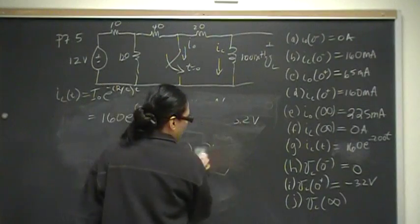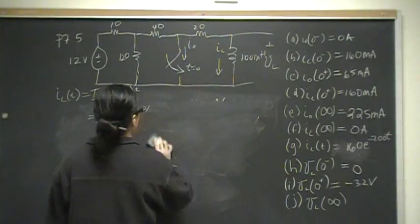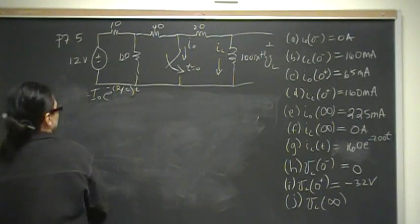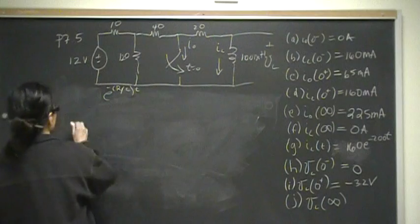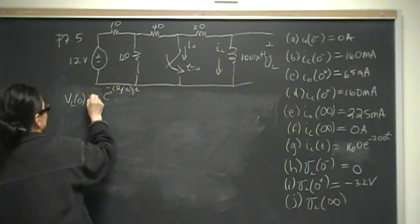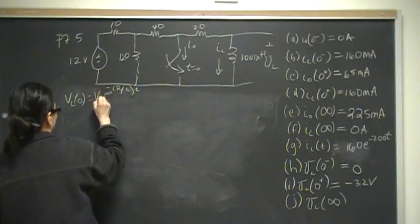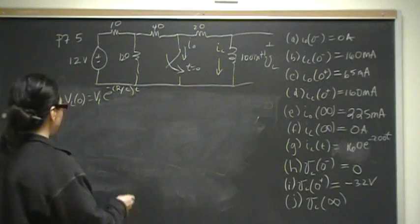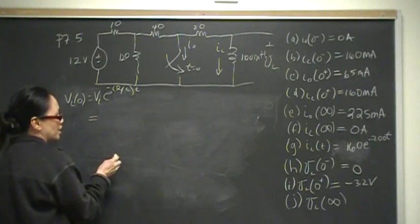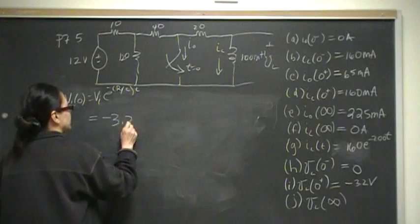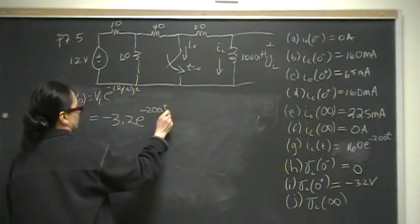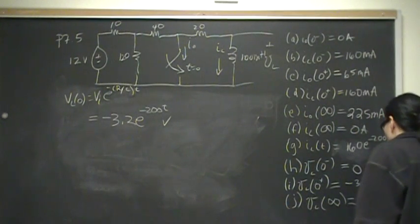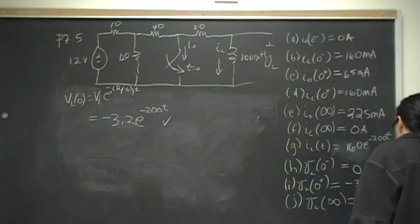The voltage at t=0+ across the inductor is negative 3.2 volts, which is the initial voltage. The general equation for the inductor voltage is V_L(t) = −3.2e^(−200t) volts.